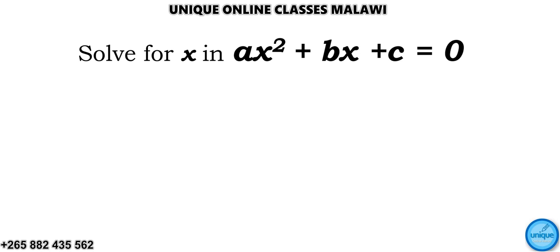Let's see how we can answer this problem. We need to solve for x in ax squared plus bx plus c equals 0. So this is the form of a quadratic equation.